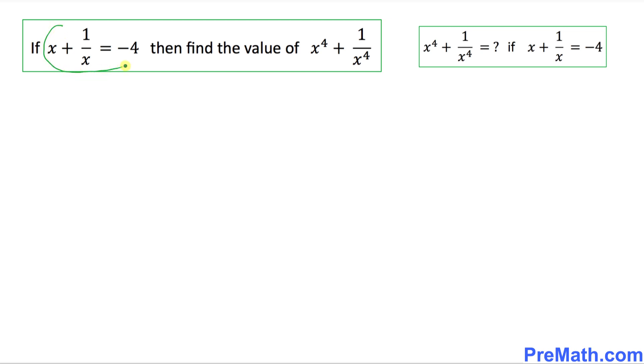So whatever this amount is, x plus 1 over x equals to negative 4, I can write it over here: x plus 1 over x equal to negative 4. What I am going to do next is I am going to square both sides.